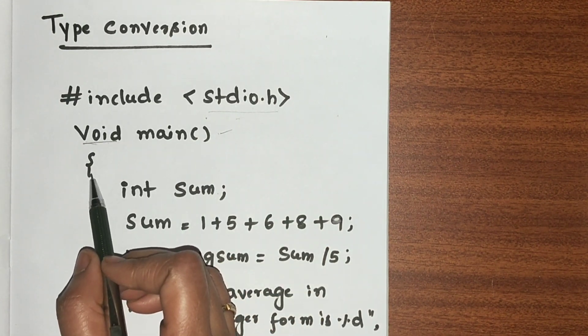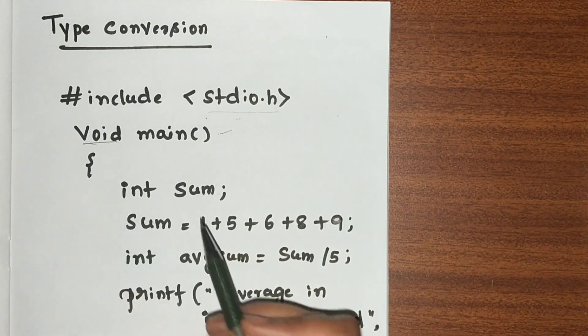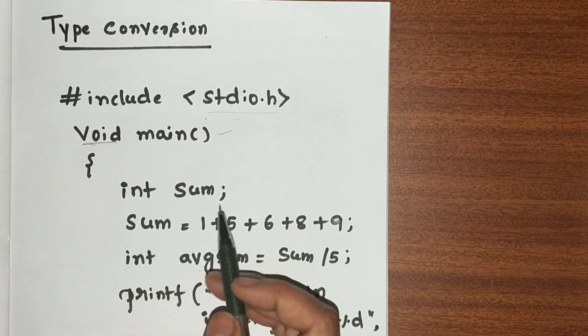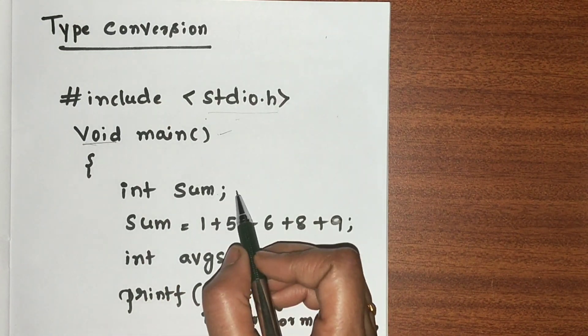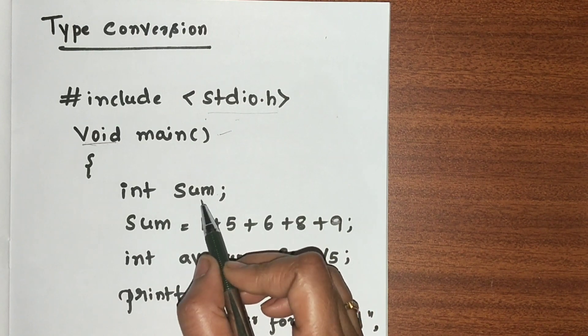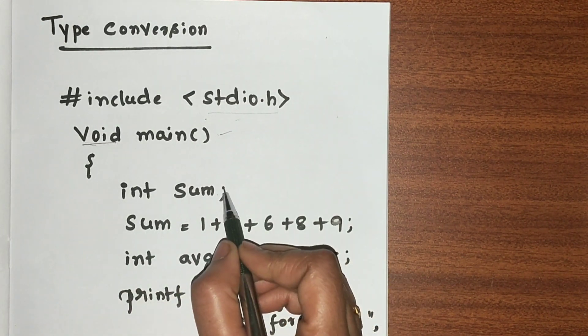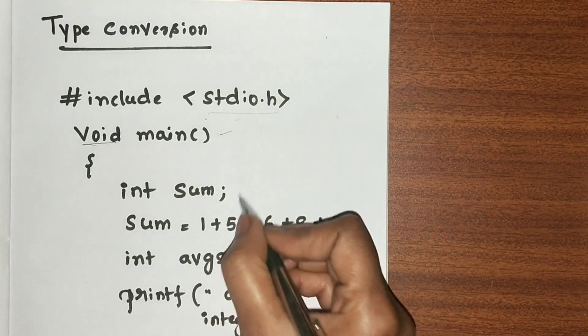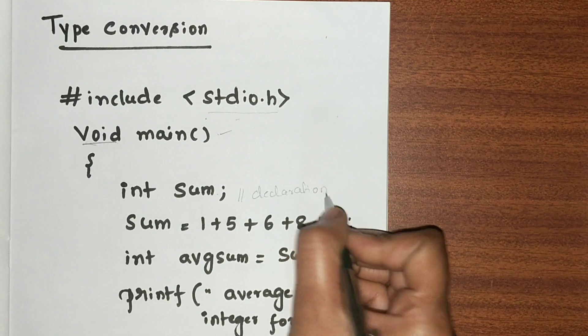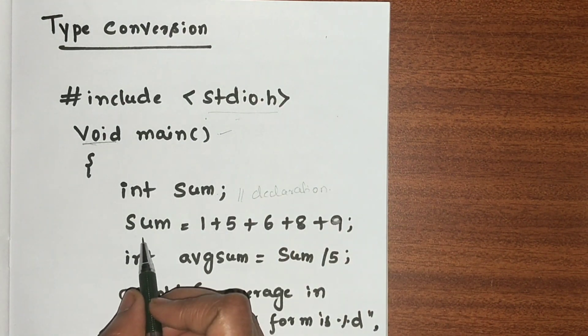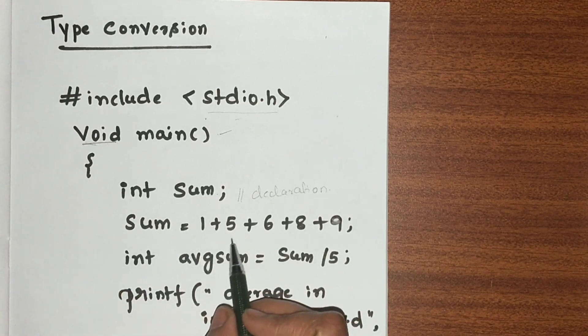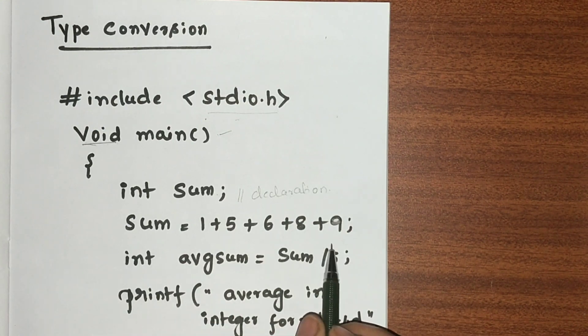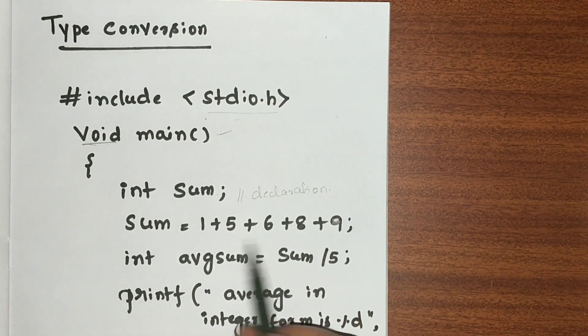After this function, I am going to open a curly bracket—it marks the starting of the function. Then int sum; this is a declaration statement where I am declaring the variable called sum of data type int, ending with a semicolon. In the next line, I am initializing values: sum = 1 + 5 + 6 + 8 + 9. The value we get is 29.